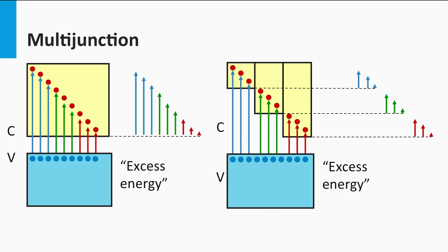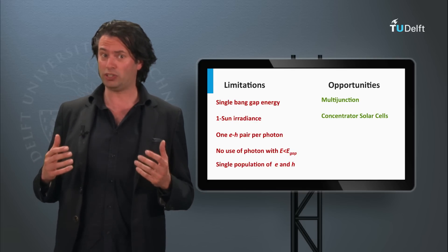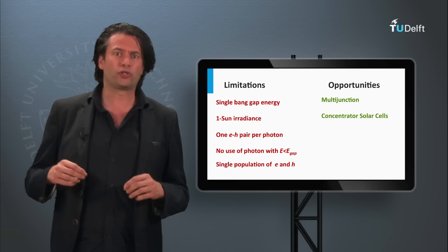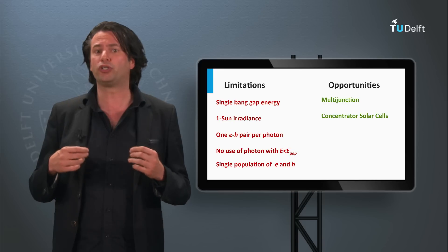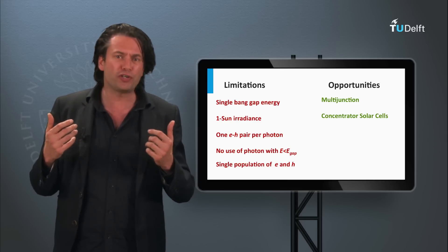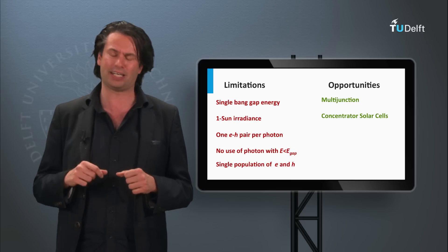Tackling the first problem has been discussed last week. Both the III-V semiconductor PV technology and the thin-film silicon technology use the concept of multi-junctions — several solar cell junctions stacked upon each other with a response to different parts of the solar spectrum. The second problem, that concepts are based on one-sun irradiance, is tackled using concentrator solar cells. The concentrated technology is applied on multi-junctions based on III-V semiconductor materials, achieving the highest conversion efficiencies of 44%, exceeding the Shockley-Queisser limit by more than 10%.